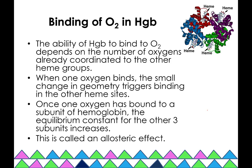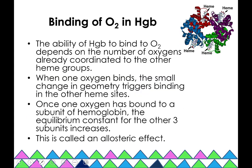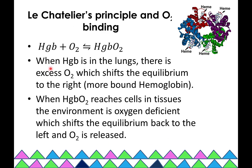Let's talk about the binding of oxygen and hemoglobin. There is what's called cooperative binding. The geometry change from deoxygenated to oxygenated hemoglobin triggers changes in the other binding sites, making it easier for oxygen to bind — this is called an allosteric effect. We can also apply Le Chatelier's principle: in the lungs there's excess oxygen driving equilibrium toward bound hemoglobin, while in oxygen-deficient tissues the equilibrium shifts back, releasing oxygen.